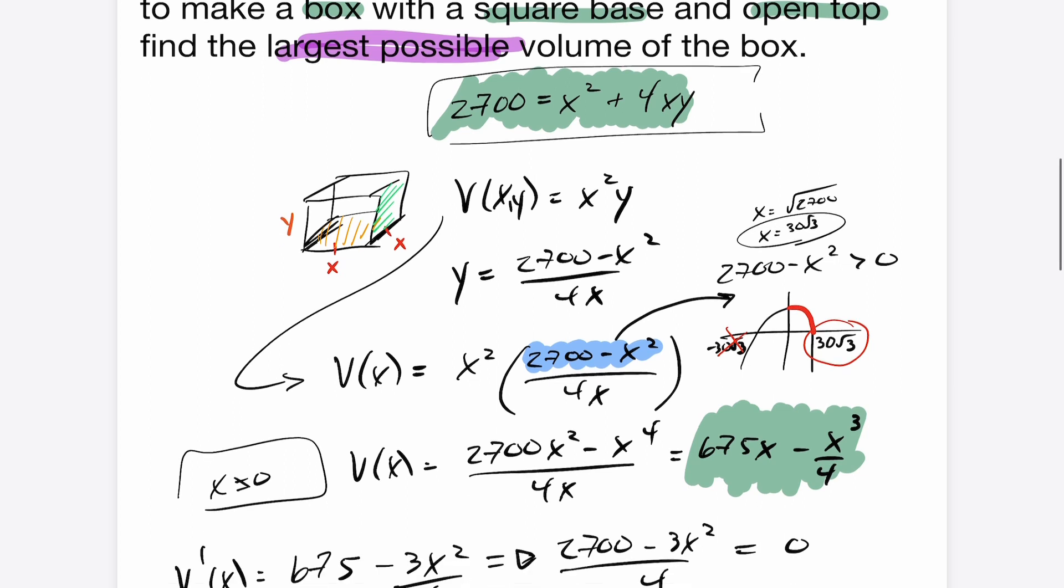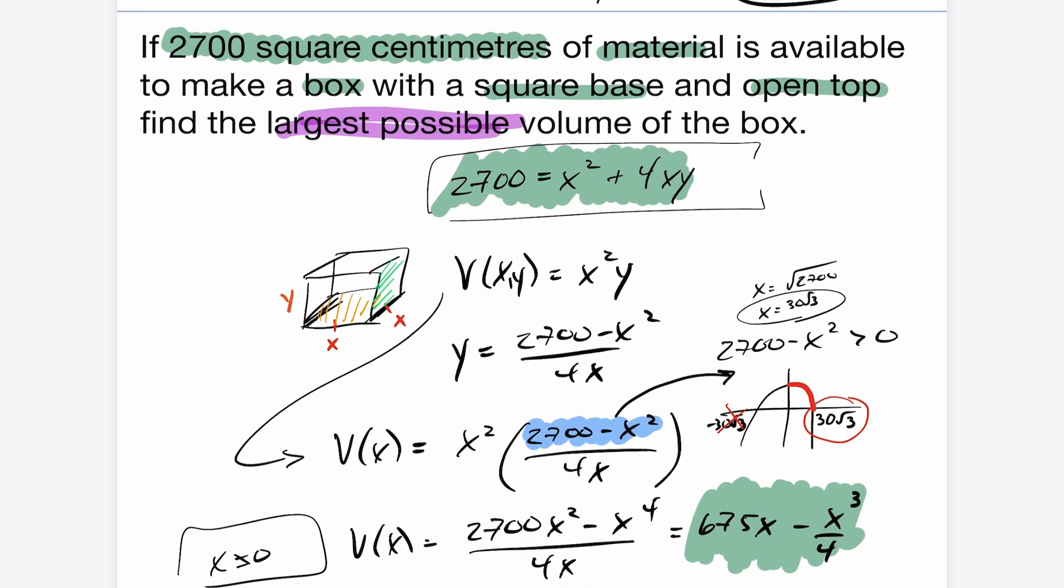They did want the corresponding Y value as well. So I go back to my equation here to find the Y value. So if I sub in a 30 into here and we do our calculation, I end up getting my Y coordinate is going to be 15. So the dimensions of the box that's required is X is going to have to be 30 and Y is going to have to be 15. This will create a square based box that has the bottom dimensions will be 30 by 30 centimeters. The height will be 15 and that will yield the largest possible volume.